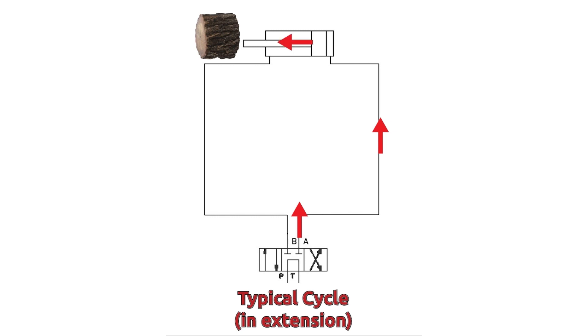The fluid is continually routed back to the tank while the log splitter is in extension. In this typical routing, the hydraulic fluid has to travel a long way in order to return to the tank.